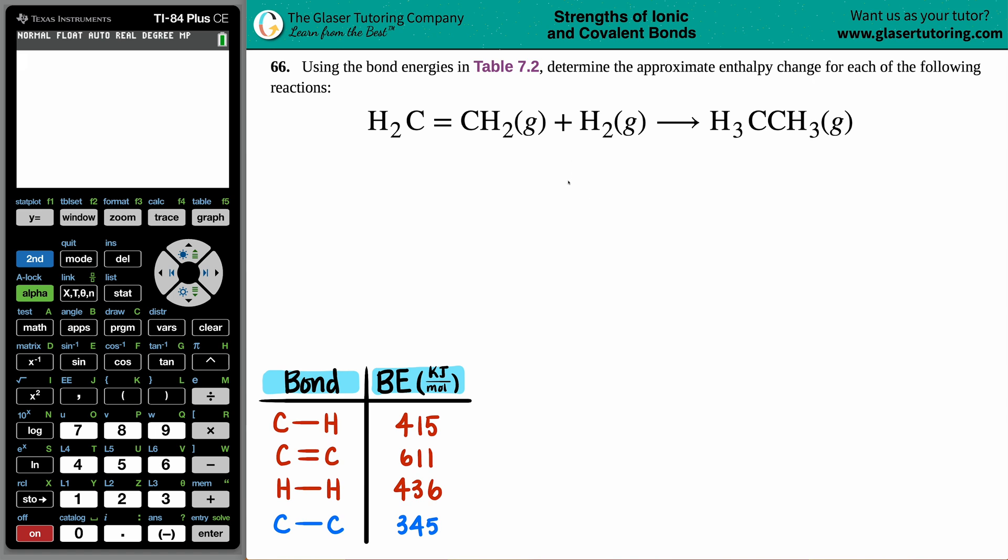Number 66. Using the bond energies in Table 7.2, determine the approximate enthalpy change for each of the following reactions. We have this reaction right here: ethene, which is H2C double bond CH2, plus hydrogen gas H2, and we will yield ethane, which is two carbons and six hydrogens, H3C-CH3.